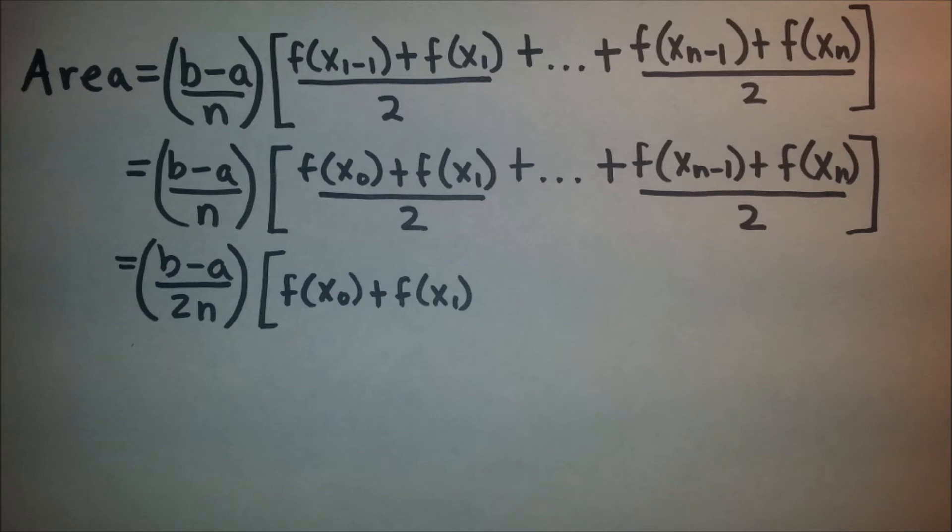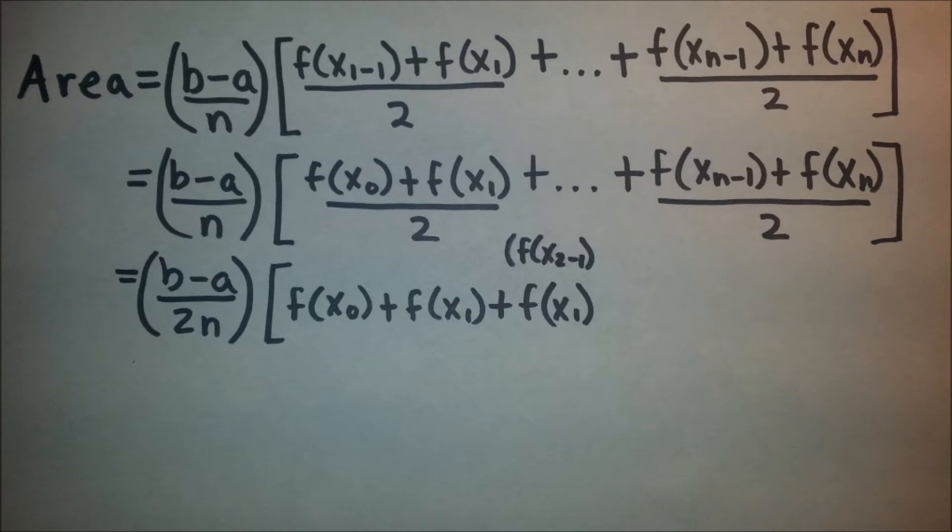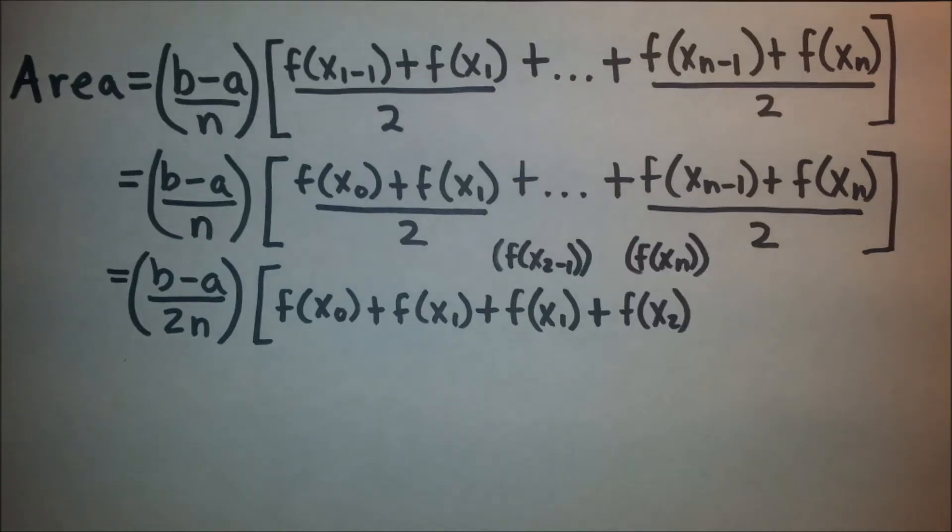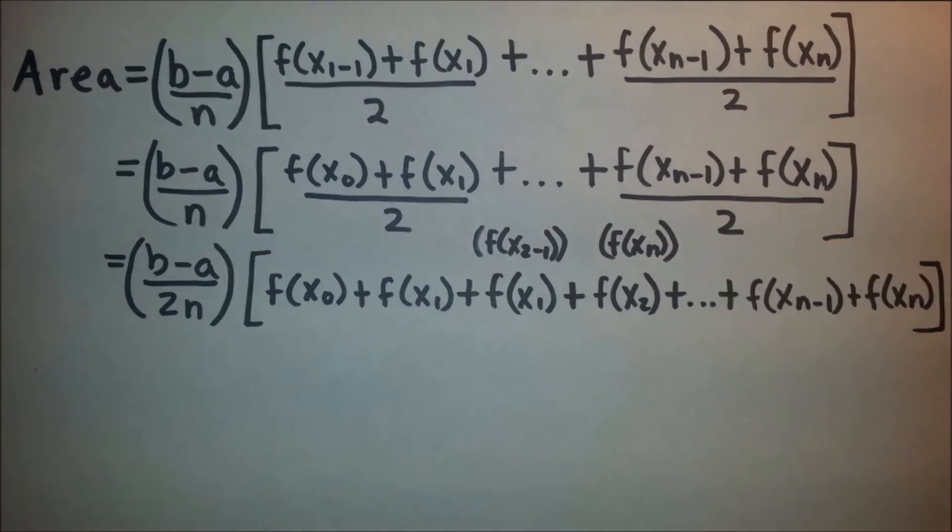Then, if we continue the formula, we get f(x_{2-1}), which when reduced is f(x₁). But we cannot forget the f(xₙ), which would be f(x₂). Then, of course, we just bring the rest down.